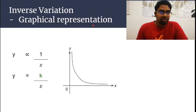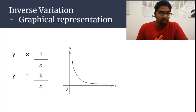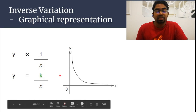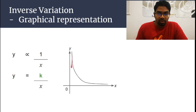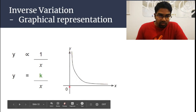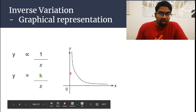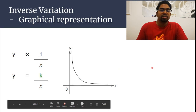Now the graphical representation of inverse variation. Direct variation is a straight line, but inverse variation is not — it is a reciprocal graph. When y varies inversely as x, y equals k over x, which is the reciprocal form a over x. You can see that as x increases, y becomes smaller, and when y becomes bigger, x becomes smaller and smaller — and vice versa.